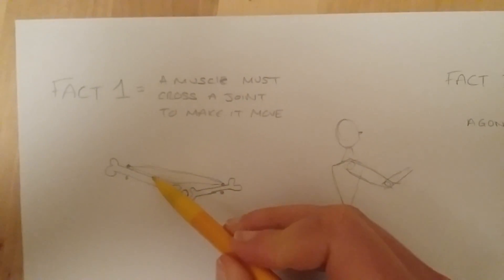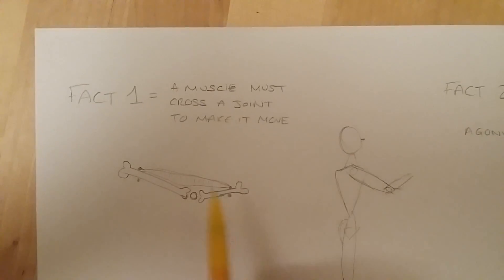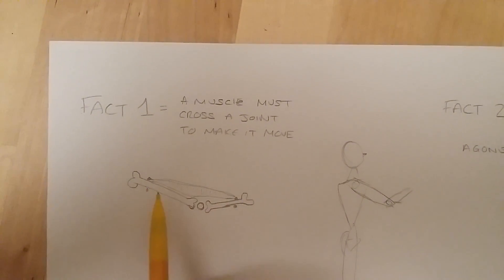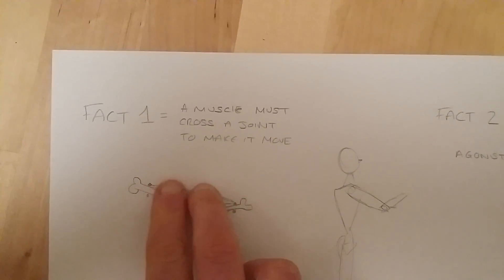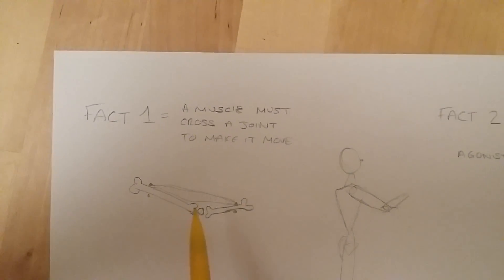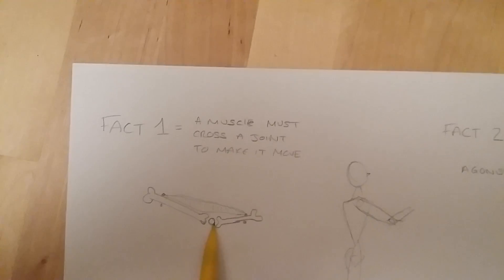Now you can imagine that if these fibres contracted and got shorter, that would bring both bones together. So it brings the origin insertion closer together and it kind of concertinas it together. So that's what's happening when the muscle contracts and it has to cross this joint in order for that to happen.